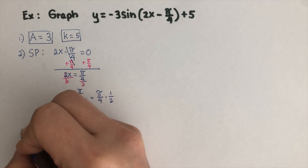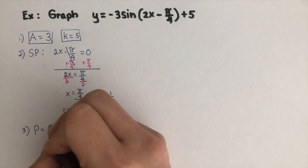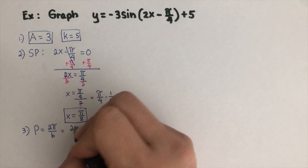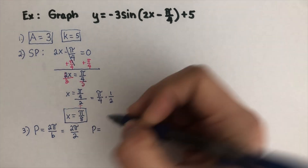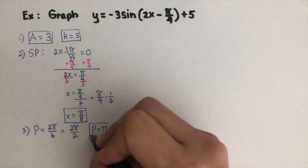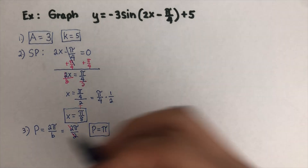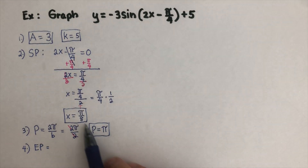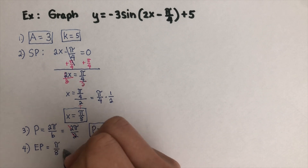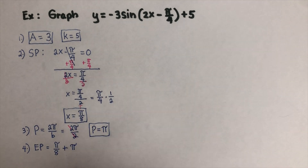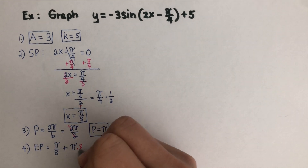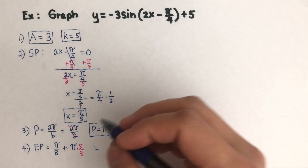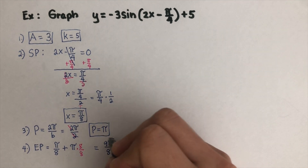Step three is to determine the period. Period equals two pi over b, and our b is two, so we get two pi over two, which simplifies to pi. Then step four is the endpoint, which is the starting point plus the period: pi over eight plus pi. Since they don't share a denominator, I multiply pi by eight over eight, giving us one pi plus eight pi equals nine pi over eight as the endpoint.